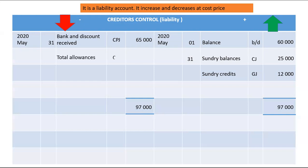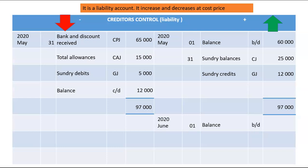Total allowances, which represent returns to creditors, come from the Creditors Allowances Journal and amount to 15,000. Any sundry debits from the General Journal are recorded on the debit side, as they reduce Creditors Control. The balance carry down will be on the debit side because the credit side is larger. Taking 97,000 minus 65,000 minus 15,000 minus 5,000 gives a balance carry down of 12,000, meaning we start June owing creditors 12,000.